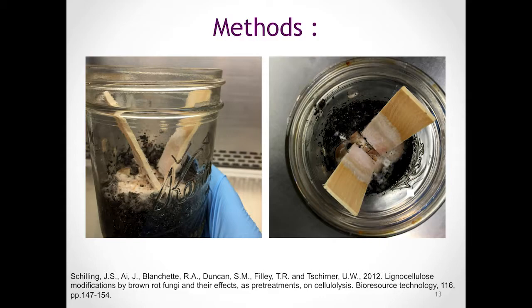In order to study Postia placenta in the lab, I'm using methodology devised by Schilling et al. in 2012. For this, we are using sterile mason jars that have been filled with a layer of sterile soil. The soil really acts as a moisture cushion — Postia placenta does not grow on the soil. We are placing two birch feeder strips horizontally onto the soil and then inoculate these feeder strips with Postia placenta.